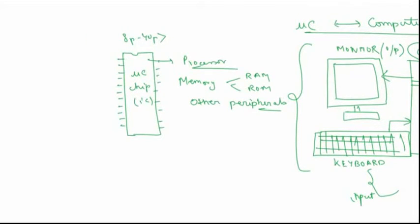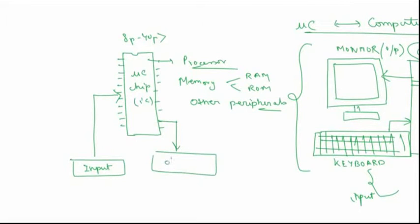You can also connect input devices to your microcontroller and output devices as well. You can connect input devices like sensors — for example, a temperature sensor, a humidity sensor, a fire sensor, or a smoke sensor. You can connect output devices like motors and LEDs.